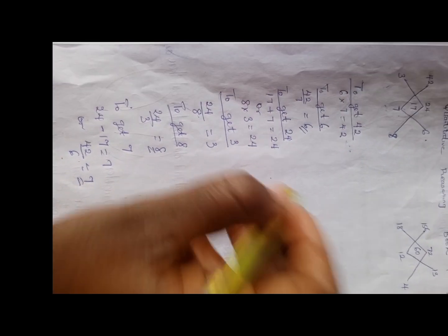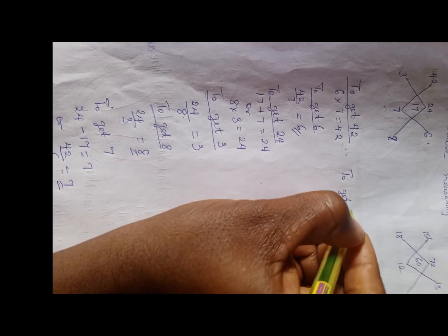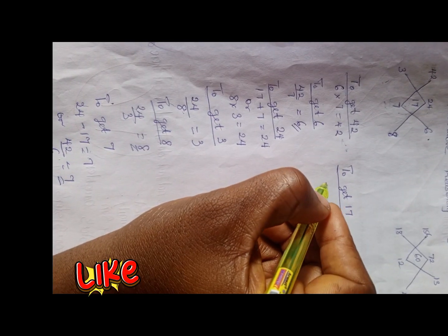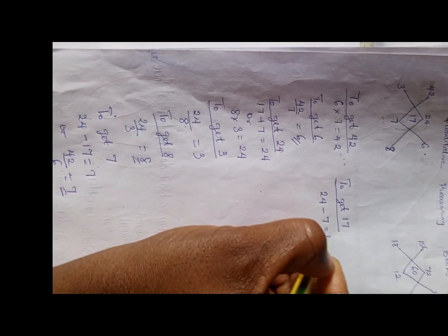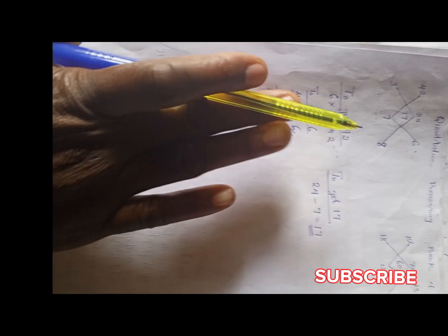We have 17 left. Let's attach it here. So to get 17, 24 minus 7 is 17.